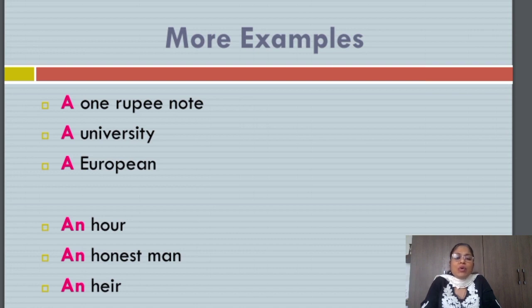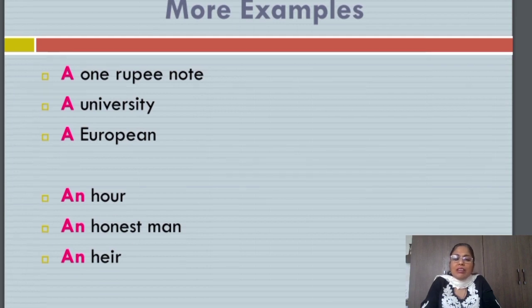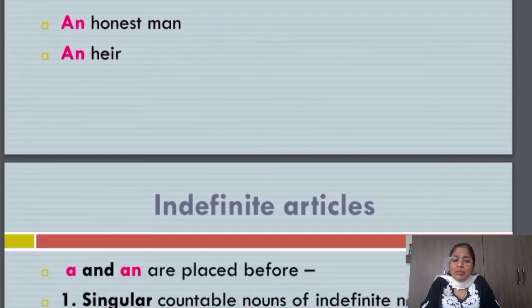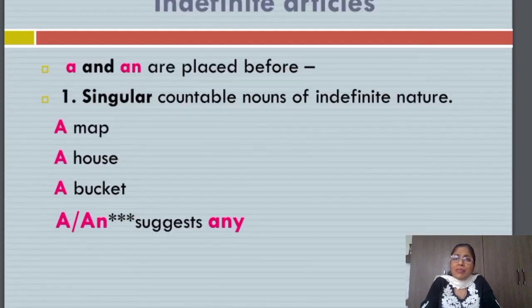But words like heir, honest and hour all have H in them. But in all three cases, the H is silent. So the pronunciation is an heir, an honest man and an hour. These are unusual usages. We need to be very careful when we select A or AN in front of the words we want to use.